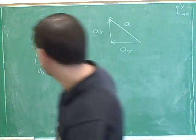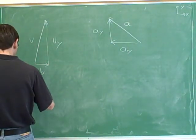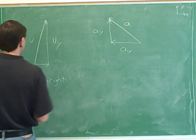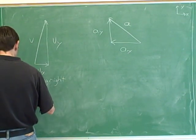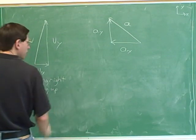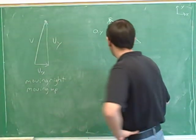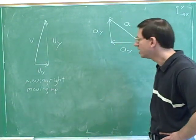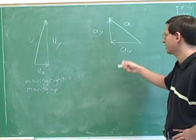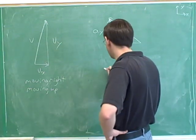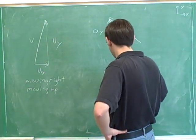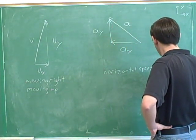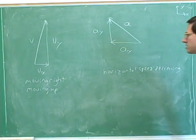Now the velocity tells us which way we're moving — horizontally we're moving right, and vertically we're moving up. Acceleration-wise, the horizontal acceleration is anti-parallel to the horizontal velocity. V sub X is to the right and A sub X is to the left, so our horizontal speed is decreasing. Our horizontal motion is slowing down.